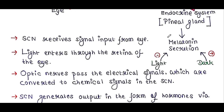The SCN controls the pineal gland to affect melatonin secretion. The synthesis and release of melatonin are stimulated by darkness — melatonin is the chemical expression of darkness — and it is inhibited by light.